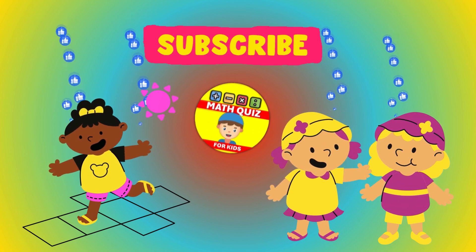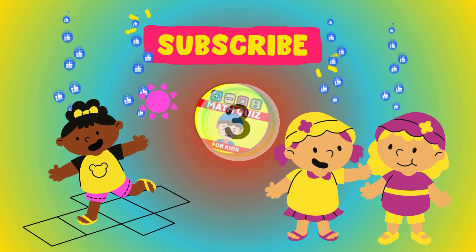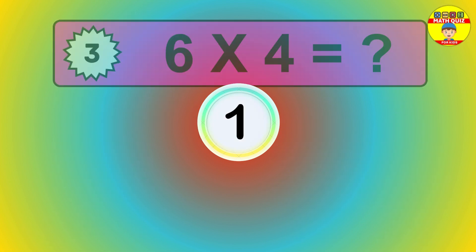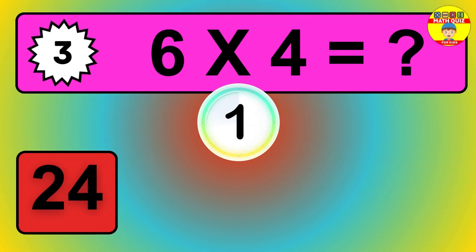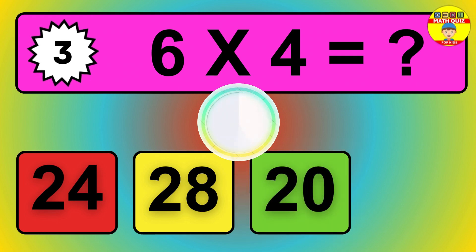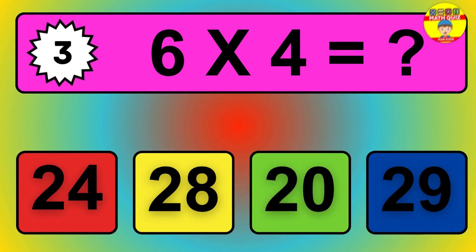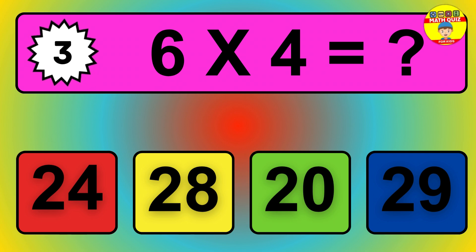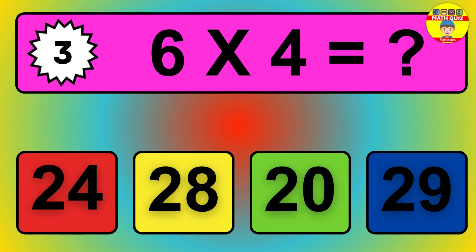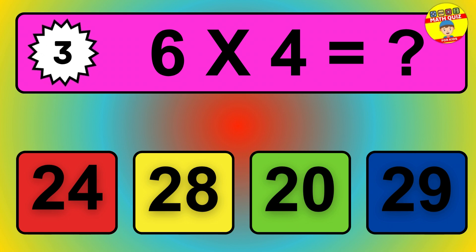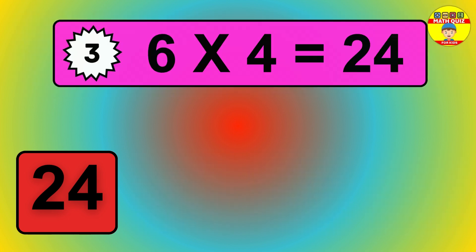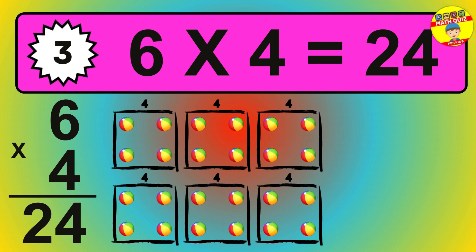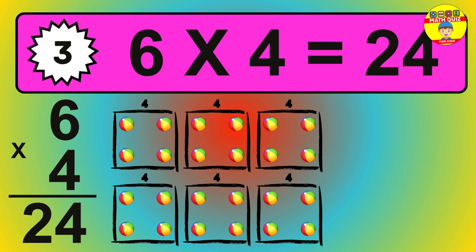Question 4. 8 times 6 equals what? The answer is 8 times 6 is 48. To calculate, we have 8 groups with 6 balls each one. So, how many balls do we have? 48 balls.